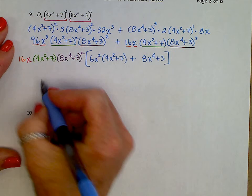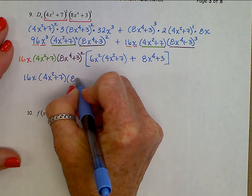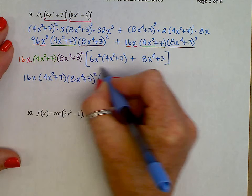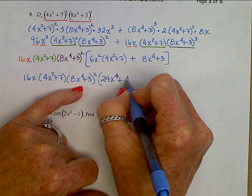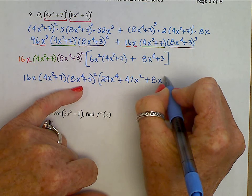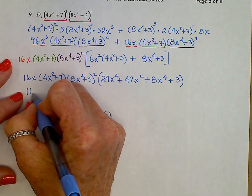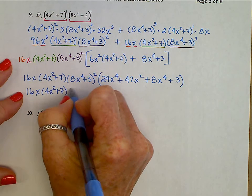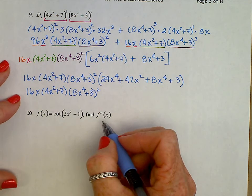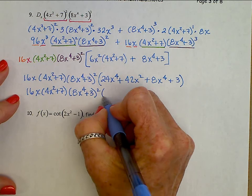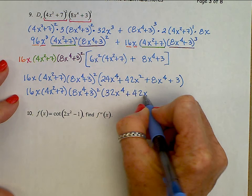Cleaning this up: we have 16X times (4X squared plus 7) times (8X to the 4th plus 3) squared. In the square brackets, distribute 6X squared through: we have 24X to the 4th plus 42X squared, plus 8X to the 4th plus 3. We can combine like terms: 24X to the 4th plus 8X to the 4th is 32X to the 4th, plus 42X squared plus 3.